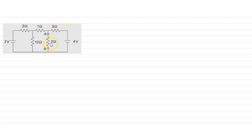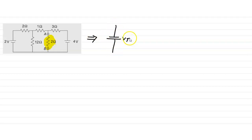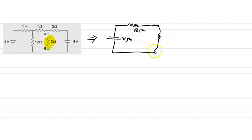Hello everyone. In this problem we have to find out the current across 2 ohm resistance by using the Thevenin principle. According to Thevenin principle, we replace this circuit by an equivalent circuit. That circuit has a single voltage source Vth in series with an equivalent resistance Rth, and at the end of the circuit we connect our load resistance RL. The RL is the resistance in which we have to find out the current, and here this is the 2 ohm resistance.